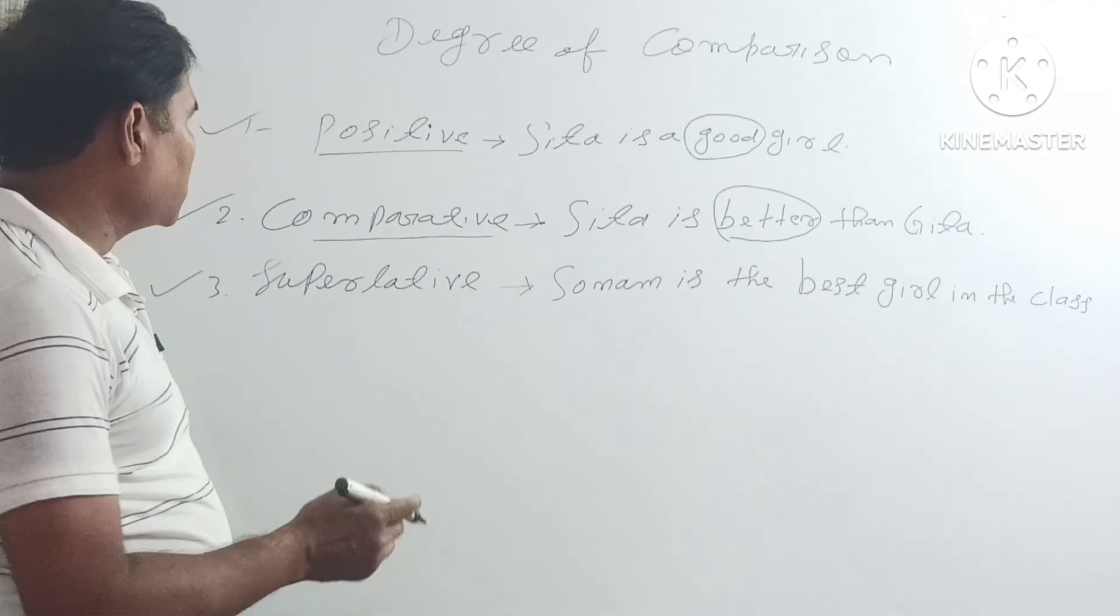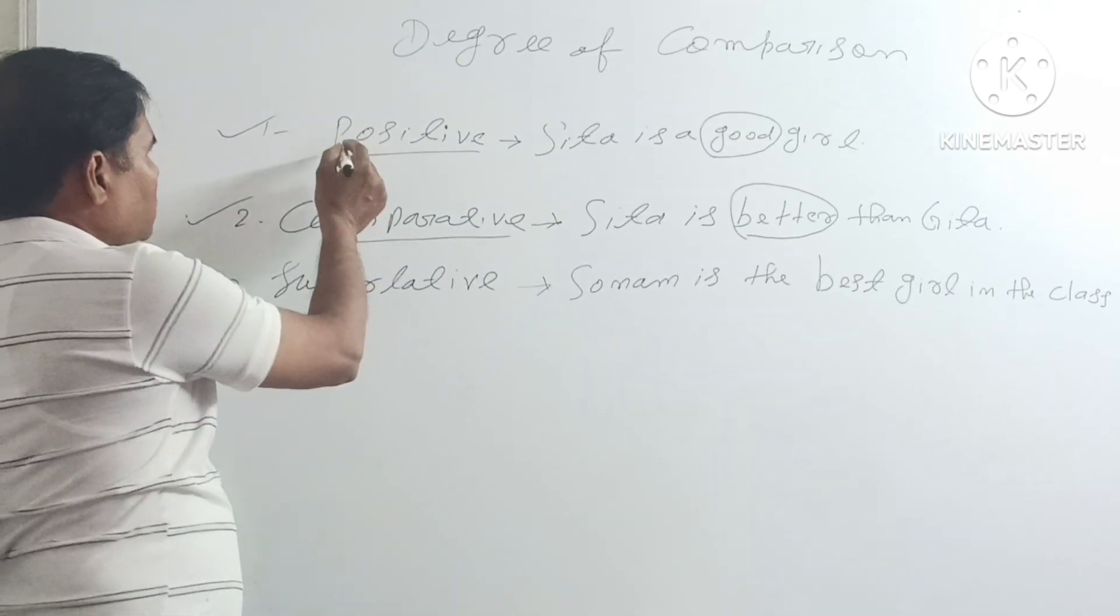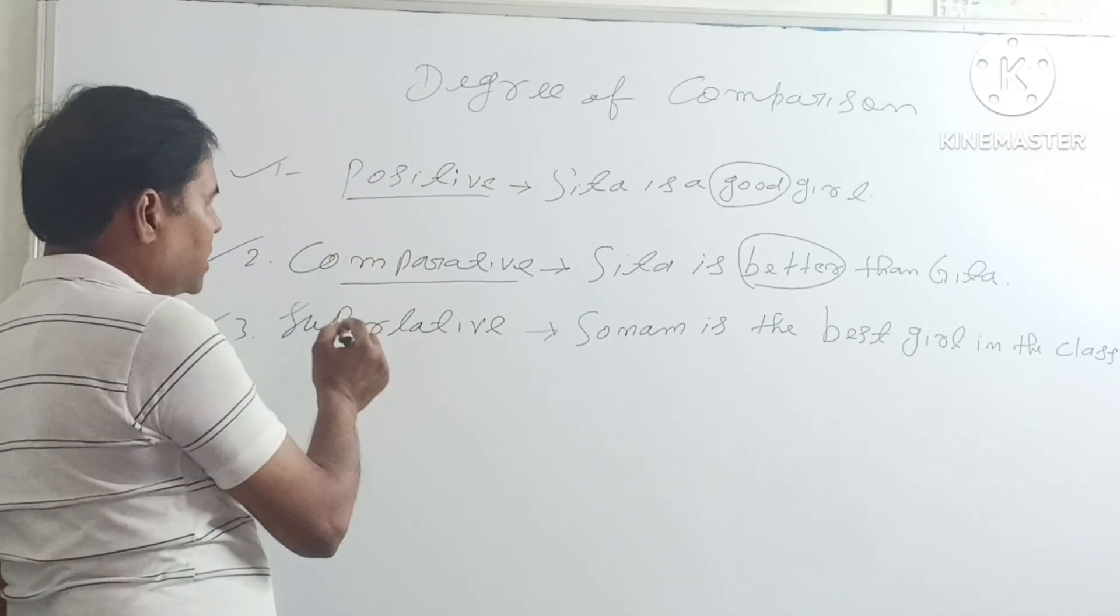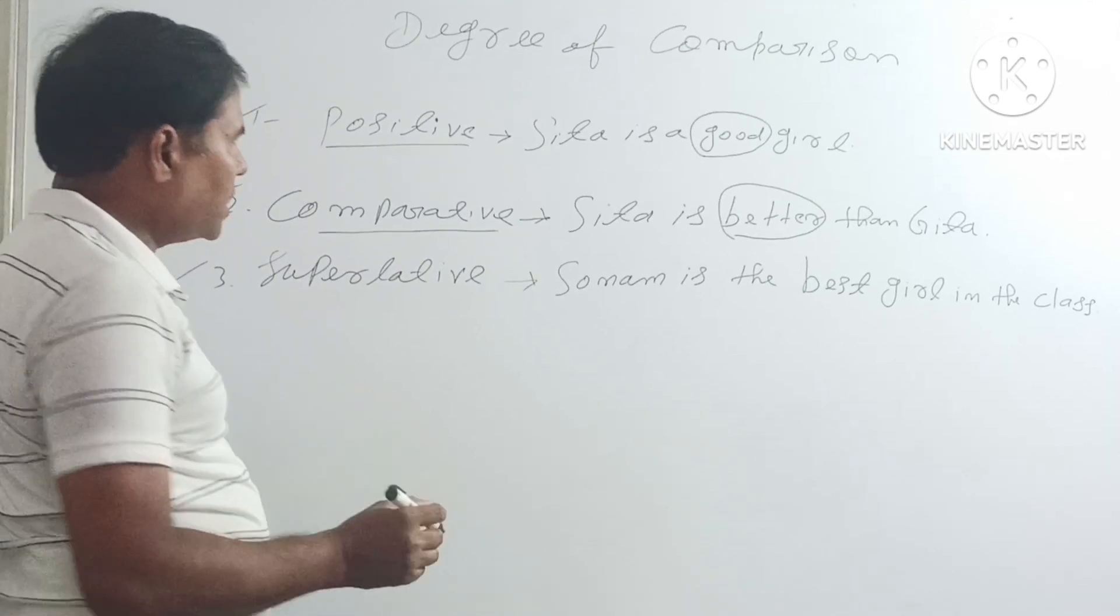Students, in English there are three kinds of degrees. First is positive degree, second is comparative degree, and third is superlative degree.